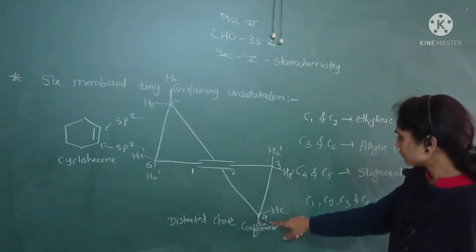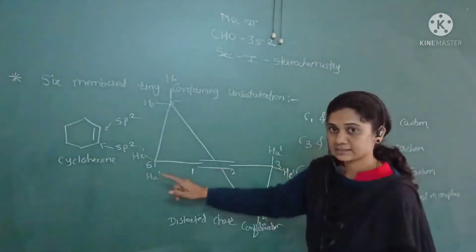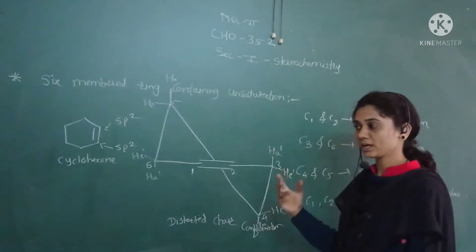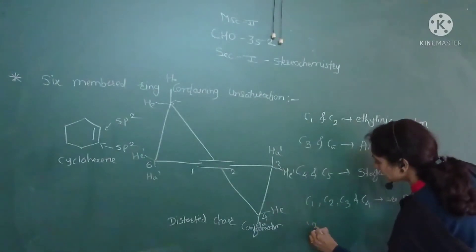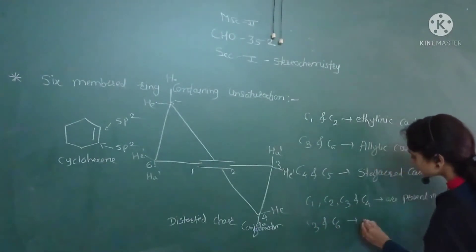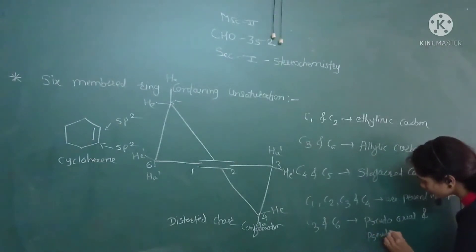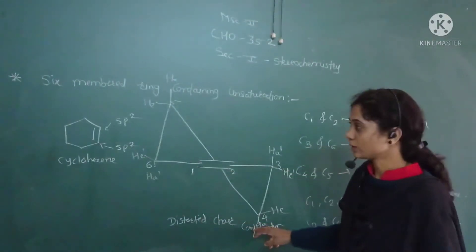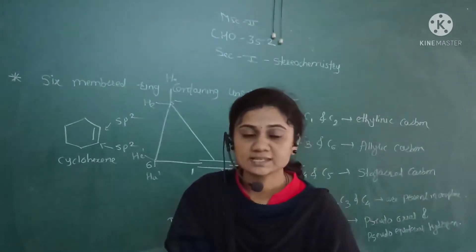At C4 and C5 the hydrogens are normally axial and equatorial, but at C3 and C6, since all four carbons are in one plane, the hydrogens are not proper axial or equatorial — they are pseudo-axial and pseudo-equatorial. This completes the structure of cyclohexene, the six-membered ring containing unsaturation. Next, we consider cyclohexanone.